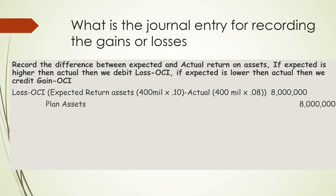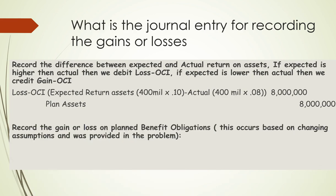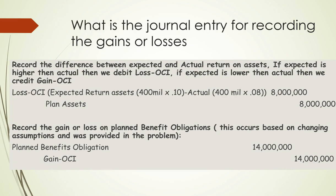We also reduce plan assets by the difference between what we expected to receive and what we actually received. To record the gain or loss on the plan benefit obligation — which occurs based on changing assumptions and was provided in the problem — the plan benefit obligation is reduced and the offset is a gain in other comprehensive income.